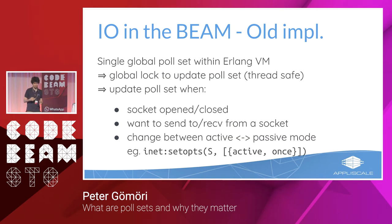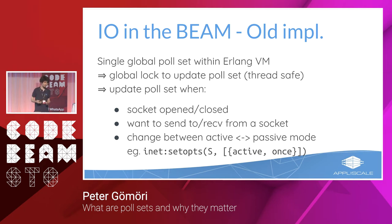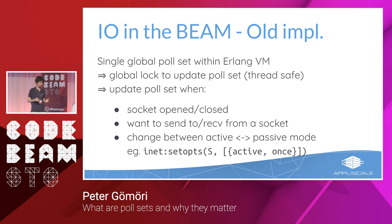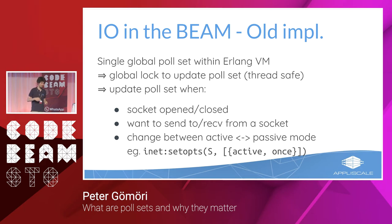There is a single global poll set in the Erlang VM with a global lock protecting it. The lock must be taken whenever there's an update — when you open or close a socket (adding or removing the file descriptor), but more often when you send or receive on a socket (adding your interest to the poll set), and also when you change the active/passive mode of a socket, which adds or removes the read flag from the file descriptor in the poll set.